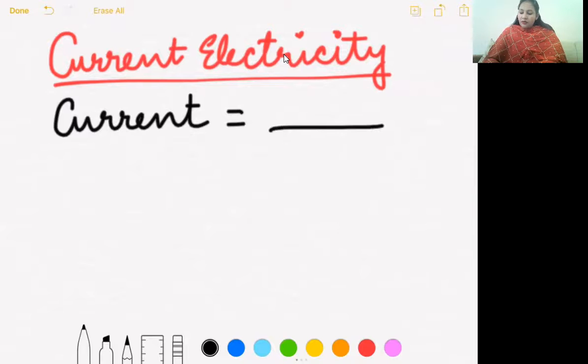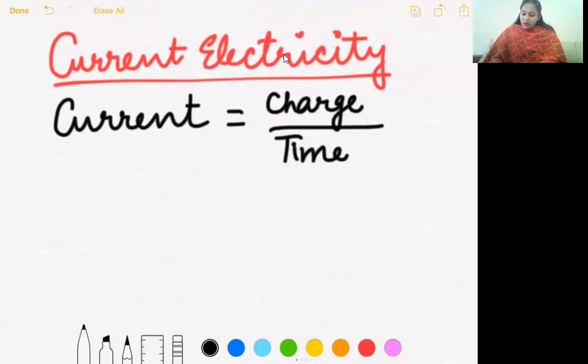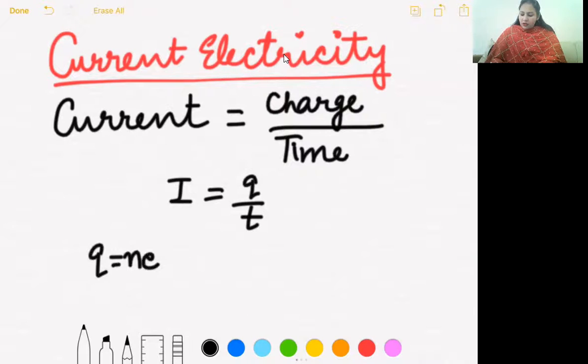Current is defined as the rate of flow of charges through a conductor. Since it's rate of flow, its formula becomes charge divided by time. In terms of symbols, I equals Q by T is the formula for current. Since we can write from Millikan's expression Q equals NE, we can also write I equals NE upon T. So accordingly we can use this formula in numerical problems.